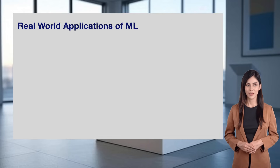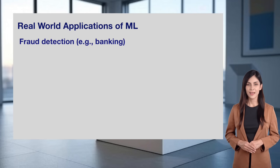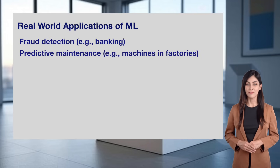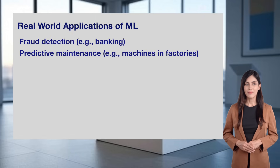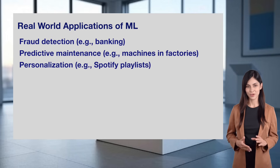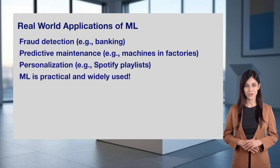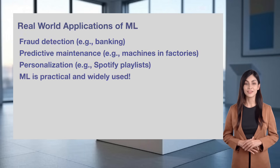Machine learning has many real-world applications. It's used in fraud detection, like spotting suspicious transactions in banking. Predictive maintenance in factories uses ML to predict when machines might fail, saving time and money. Even personalization, like Spotify curating playlists for you, relies on machine learning. ML is practical and widely used, making our lives easier in so many ways.